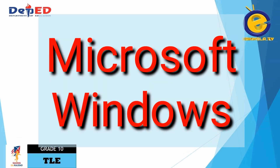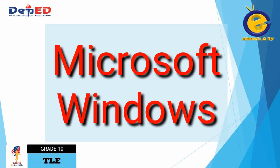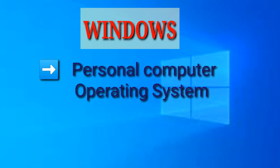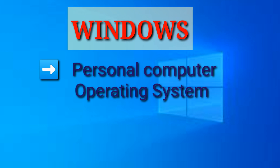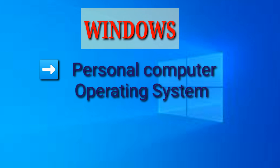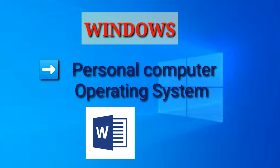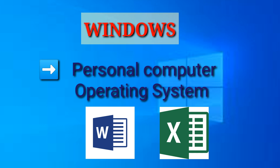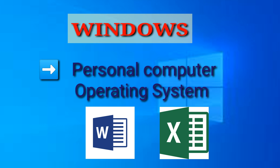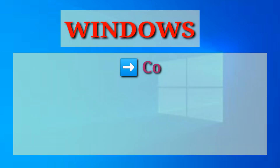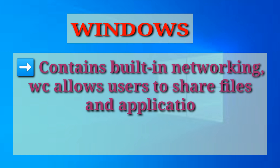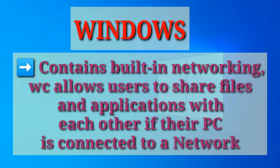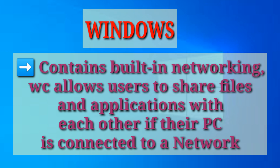The last example of operating system is Microsoft Windows. Windows is a personal computer operating system from Microsoft that, together with some commonly used business applications such as Microsoft Word and Excel, has become a de facto standard for individual users in most corporations as well as in most homes. Windows contains built-in networking, which allows users to share files and applications with each other if their PCs are connected to a network.